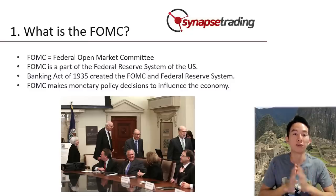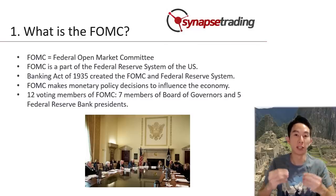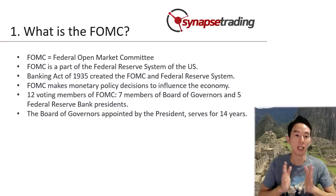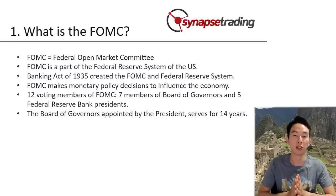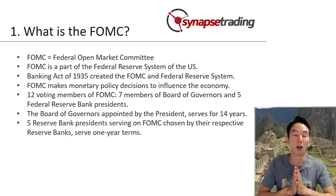The FOMC is responsible for making monetary policy decisions, which can include changes in interest rates or other measures to influence the economy. The FOMC is made up of 12 voting members, including the 7 members of the Board of Governors of the Federal Reserve System and 5 of the 12 Federal Reserve Bank Presidents. The Board of Governors is appointed by the President of the United States, subject to Senate confirmation, and serves for a 14-year term. The 5 Reserve Bank Presidents who also serve on the FOMC are chosen by their respective reserve banks and serve 1-year terms.